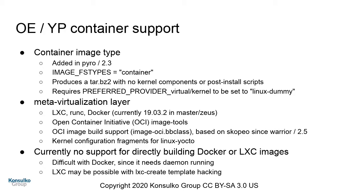Getting closer to the nitty gritty: as Bruce mentioned, there's been container support since Pyro, which basically lets you build an image that's just a pure tarball with no kernel components. This is basically what you would get in a container. meta-virtualization provides all the extra tooling and has the OCI tools that Bruce was mentioning. Since Warrior, I believe, is when that came in. We can build an OCI image and you can upload that into Docker very straightforwardly, as Bruce was showing.